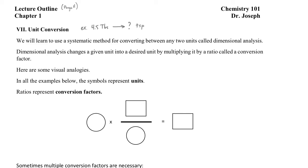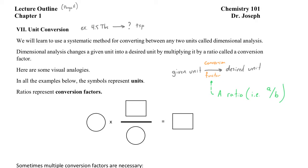In order to do that, I'm going to teach you first about some terminology that we use in dimensional analysis. Dimensional analysis changes a given unit into a desired unit by multiplying the given unit by a ratio. This ratio has a specific name — it's called a conversion factor. The process of dimensional analysis starts with some given unit and we know we need to go to some desired unit; to do so we use a conversion factor.